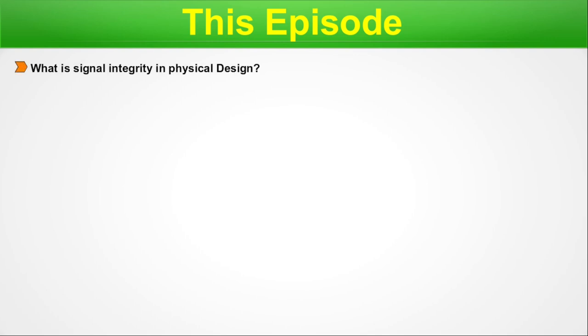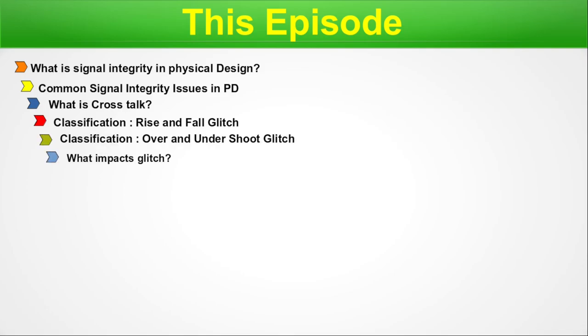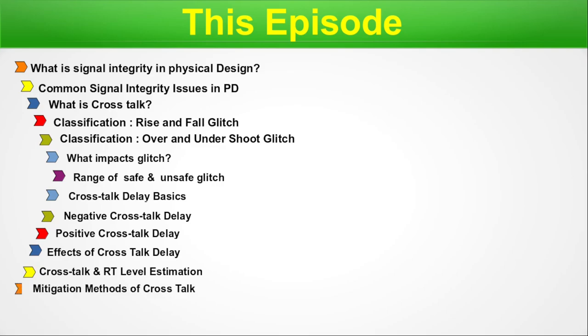Let's take a look at the pointers we are going to discuss today. First, what is Signal Integrity in Physical Design? Second, common Signal Integrity issues in PD. Third, what is Cross-Talk? Then classification of Rise and Fall Glitch, over and undershoot glitch, what impacts glitch, range of safe and unsafe glitch, Cross-Talk Delay basics, negative and positive Cross-Talk Delay, effects of Cross-Talk Delay, Cross-Talk and RT Level Estimation, and finally mitigation methods of Cross-Talk.